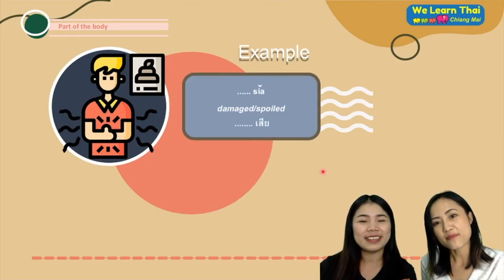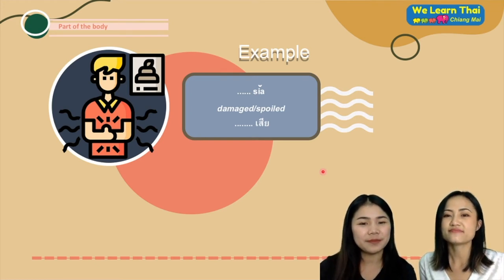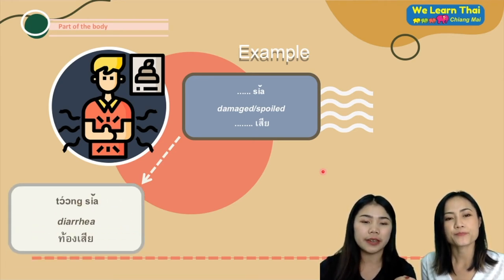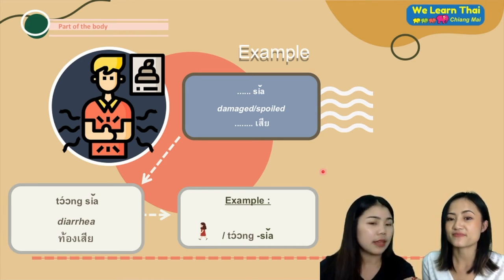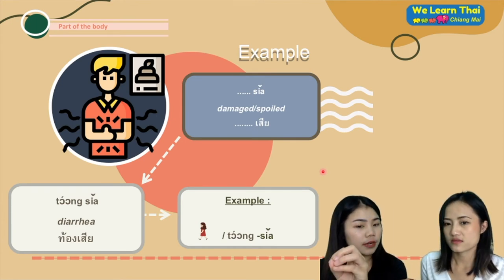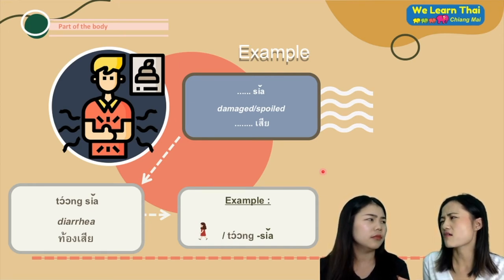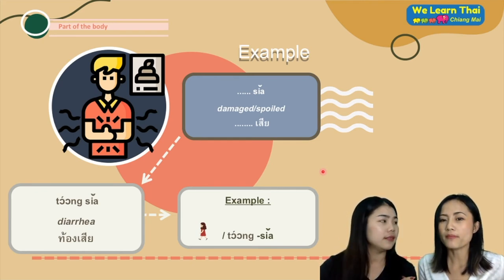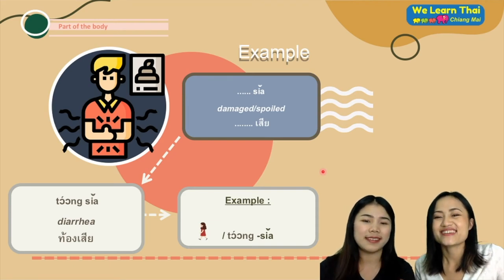We also have the word เสีย. You say ท้องเสีย, which means diarrhea. For the pattern, you say ฉันท้องเสีย or ผมท้องเสีย. We don't say ฉันมีท้องเสีย. You just say ฉัน plus ท้องเสีย, meaning 'I have diarrhea.'